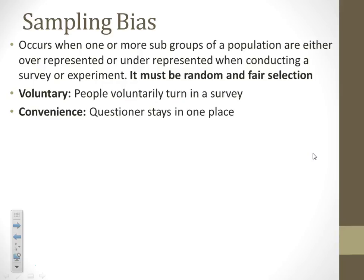Convenience bias is when the questioner stays in one place, so you're not interacting with everybody — kind of like walking to the coffee shop. Not everybody drinks coffee, so you're missing that group; one group is overrepresented whereas others are underrepresented.